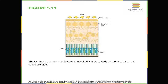Rods and cones are connected, via several interneurons, to retinal ganglion cells. Axons from the retinal ganglion cells converge and exit through the back of the eye to form the optic nerve. The optic nerve carries visual information from the retina to the brain. There's a point in the visual field called the blind spot. Even when light from a small object is focused on the blind spot, we don't see it.